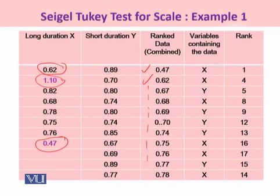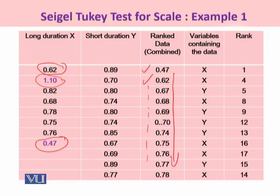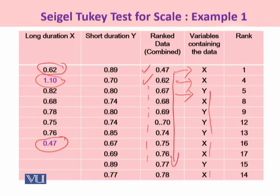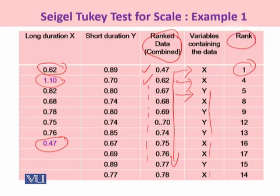We sum up these ranks and assign them accordingly. We have arranged data from smallest to the largest, so the ranks of the combined data go from smallest to largest. Once done, we identify which variable each observation originally belongs to. For example, 0.47 belongs to the x sample, 0.62 also belongs to the x sample, 0.67 belongs to the y sample, and so on. We keep noting down the actual identity of each data point arranged from smallest to largest. Then we assign ranks to that combined data in the last column.